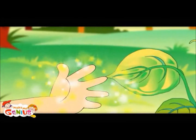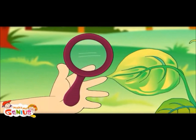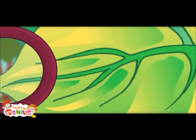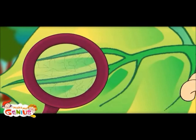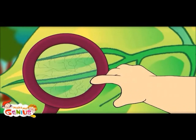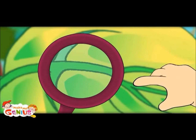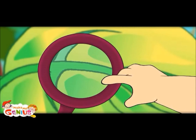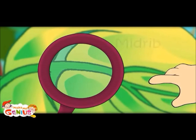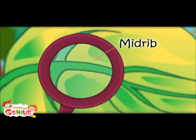Let me show you leaves by a magnifying glass. Oh, plants have veins like us. Yes, there are many veins in a leaf. Oh, this is a very big vein. This is called the midrib.